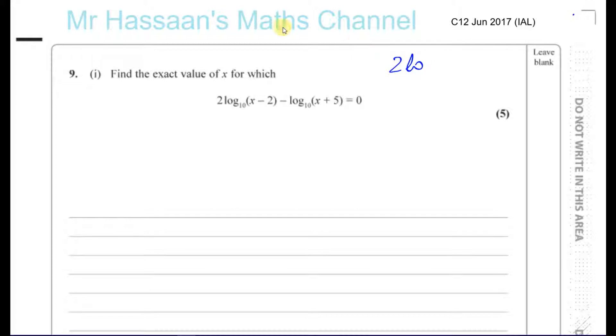So 2 log, or let me just write the general rule. If I have A log to the base C of B, that A can be written as the power of B. So you can write that as log to the base C of B to the power of A. The A becomes a power.